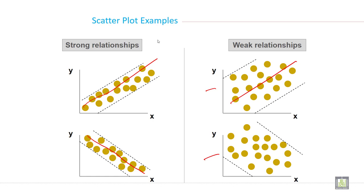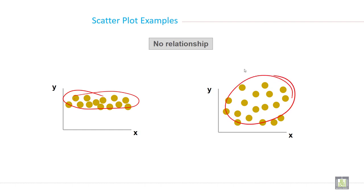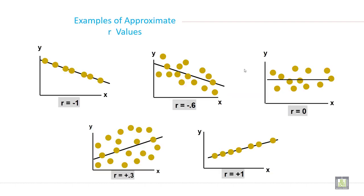This is just a summary of a scatter plot. For no relationship, you cannot draw a line because there is no relationship between the two variables. Here also there is no relationship between the two variables.